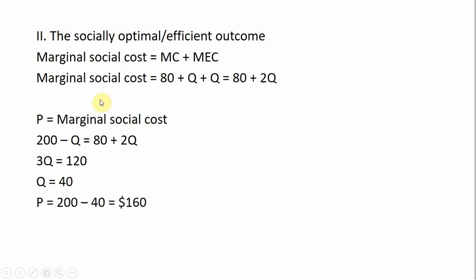In equilibrium, efficiency will occur where price equals marginal social cost. Setting the price equation equal to our marginal social cost equation and solving for Q, Q equals 40, which is a little bit lower than we saw in example one. And we get the price of 160, which is a little bit higher.